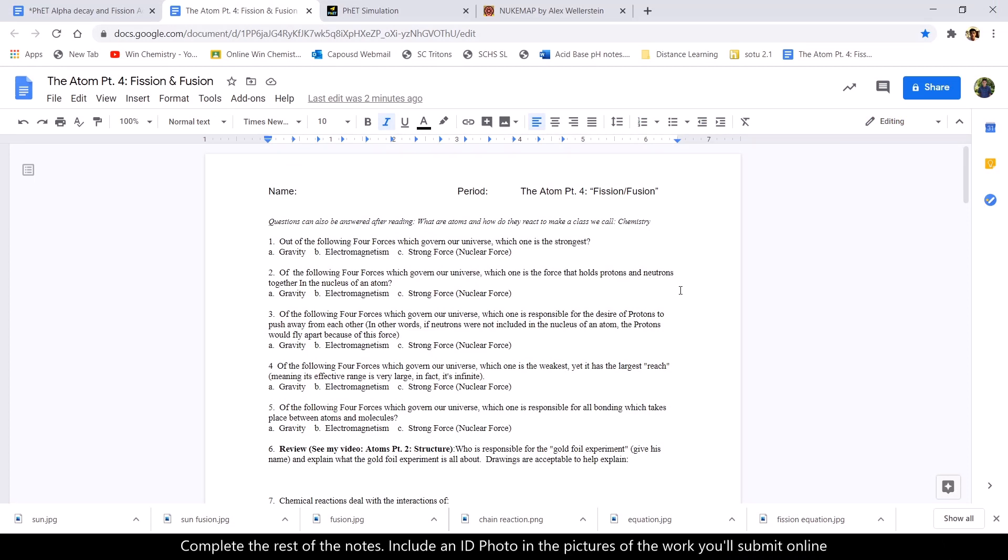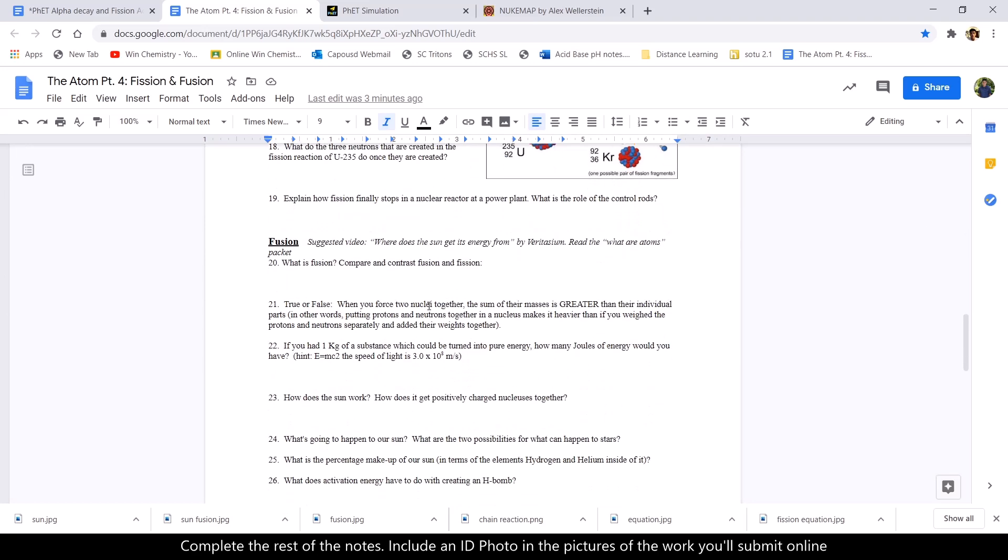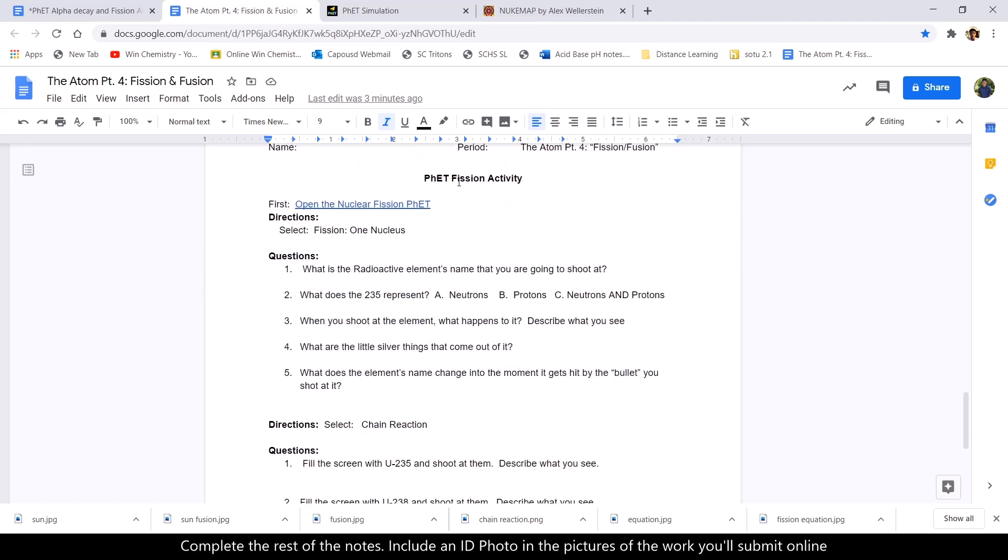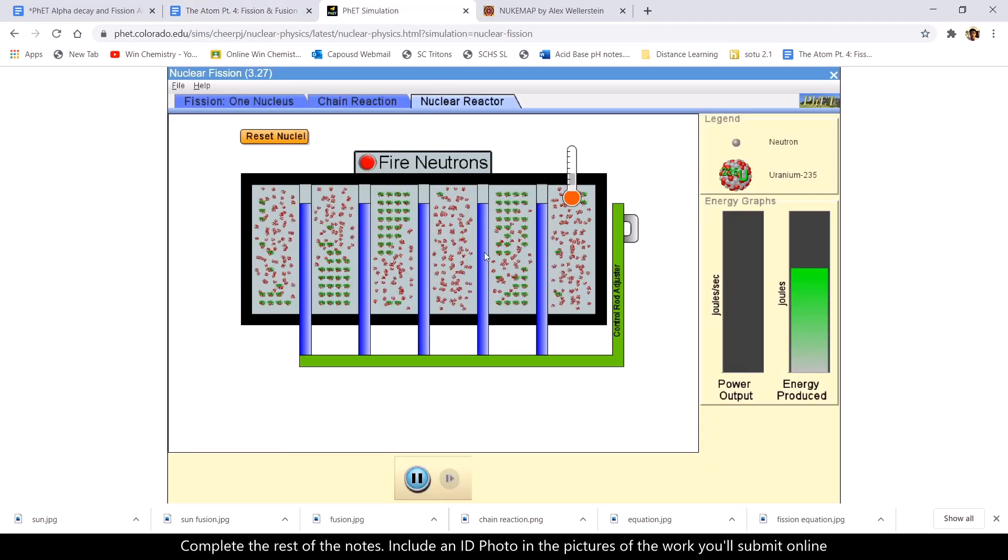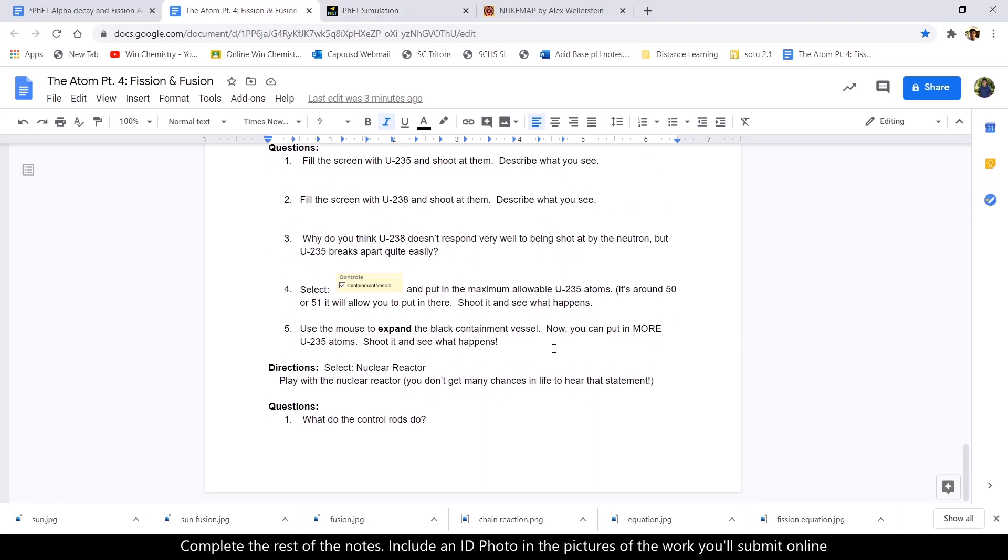Alright, that concludes my talk on the atom part 4, which covered fission and fusion. Most of these questions I answered already during this video. If there's anything that I left out, make sure you read over the packet that was given to you. What are atoms and how do they react to make a class we call chemistry? So this one is super helpful. It gives all the answers. Just go through the notes again. Fill in all the stuff that you just learned about. And try the fission activity for yourself too. So the fission activity was this thing. Make sure you go through all the tabs and just try it out for yourself. There's a lot to learn. Thanks for watching, and I'll see you next time on Wind Chemistry.